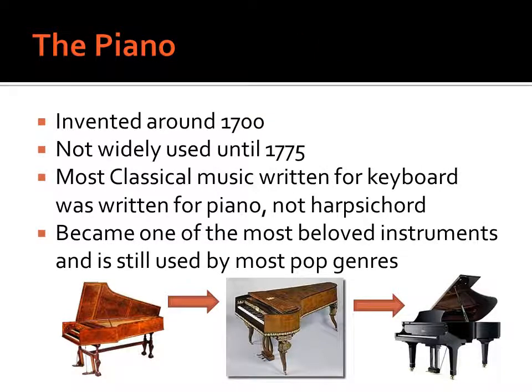The piano was one of the things that really changed music for the better in the classical period. The piano was invented around 1700, still during the Baroque, but it wasn't widely used until 1775. This was because it wasn't until around 1775 that the middle class was fully established and the instrument itself was stable enough to be used well. Once the middle class heard this instrument, they were keen to have it in their homes.